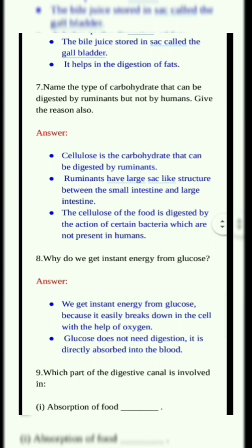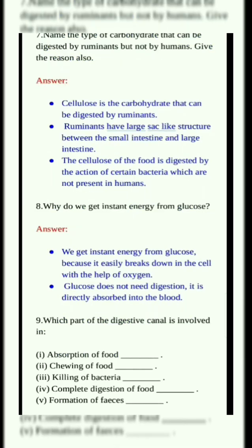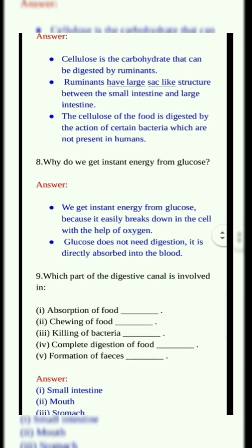Why do we get instant energy from glucose? Answer: We get instant energy from glucose because it is broken down in the cell with the help of oxygen. Glucose does not need digestion. It is directly absorbed into the bloodstream.